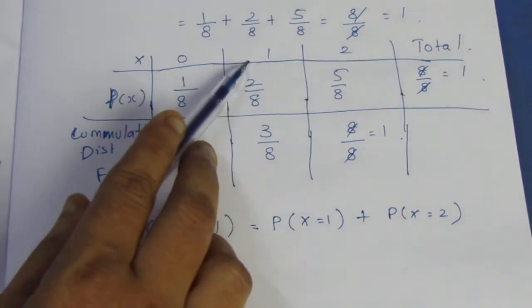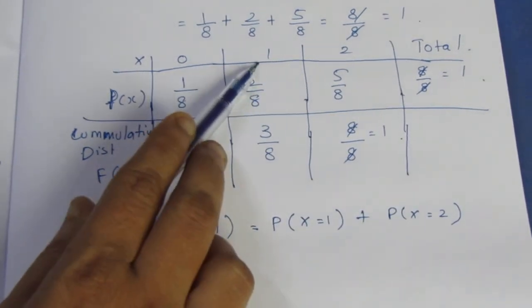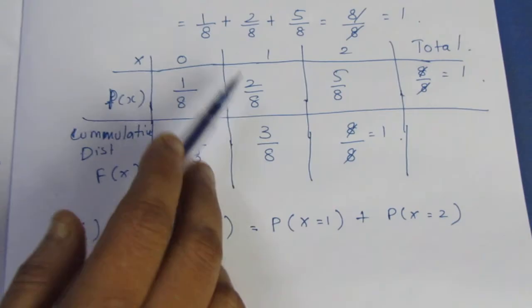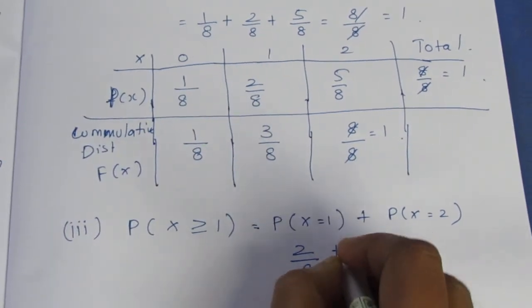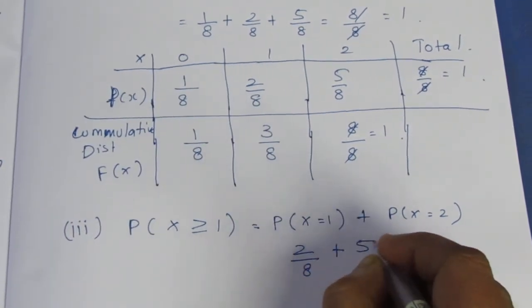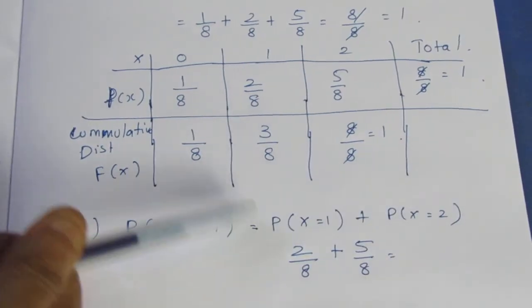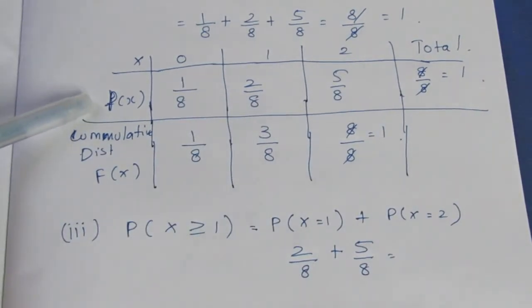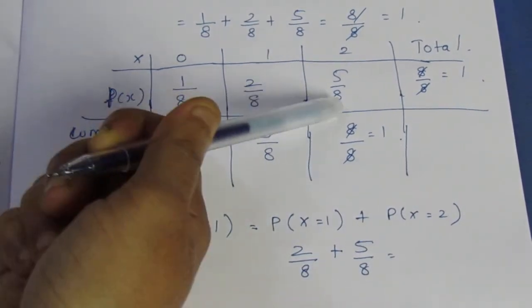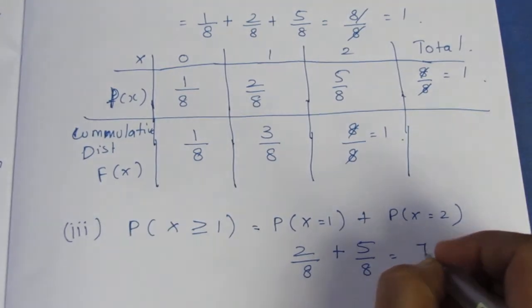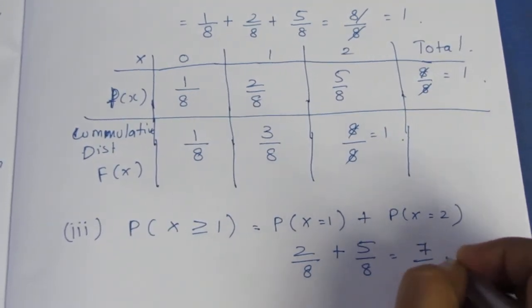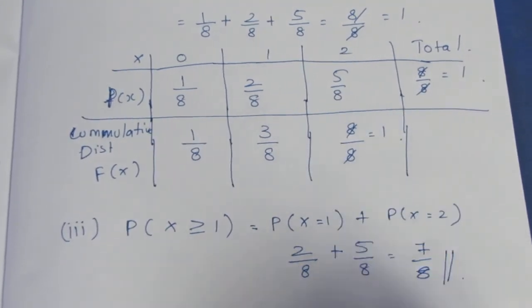For the third subdivision, P(x ≥ 1) = P(x = 1) + P(x = 2) = 2/8 + 5/8 = 7/8. So the answer is 7/8. Thank you.